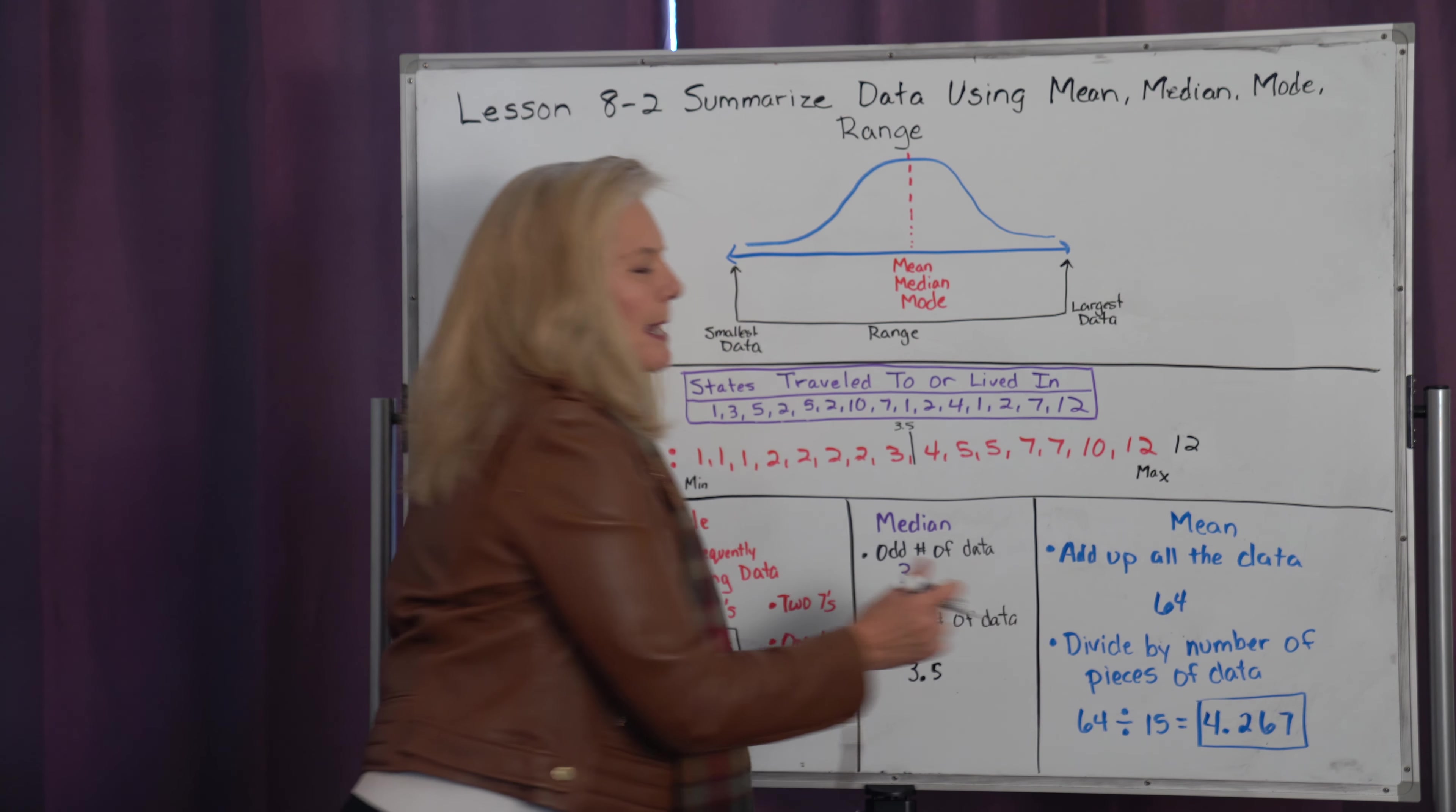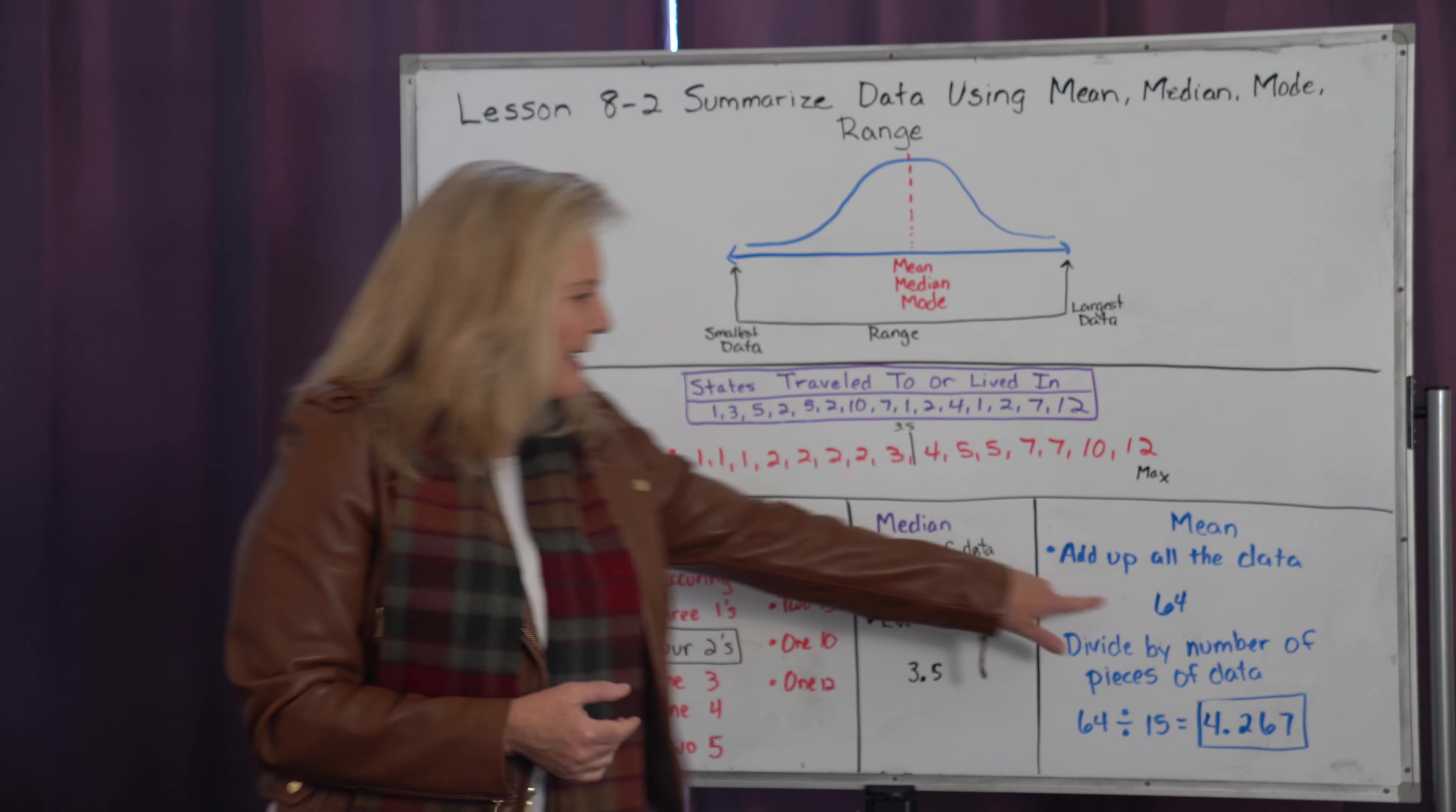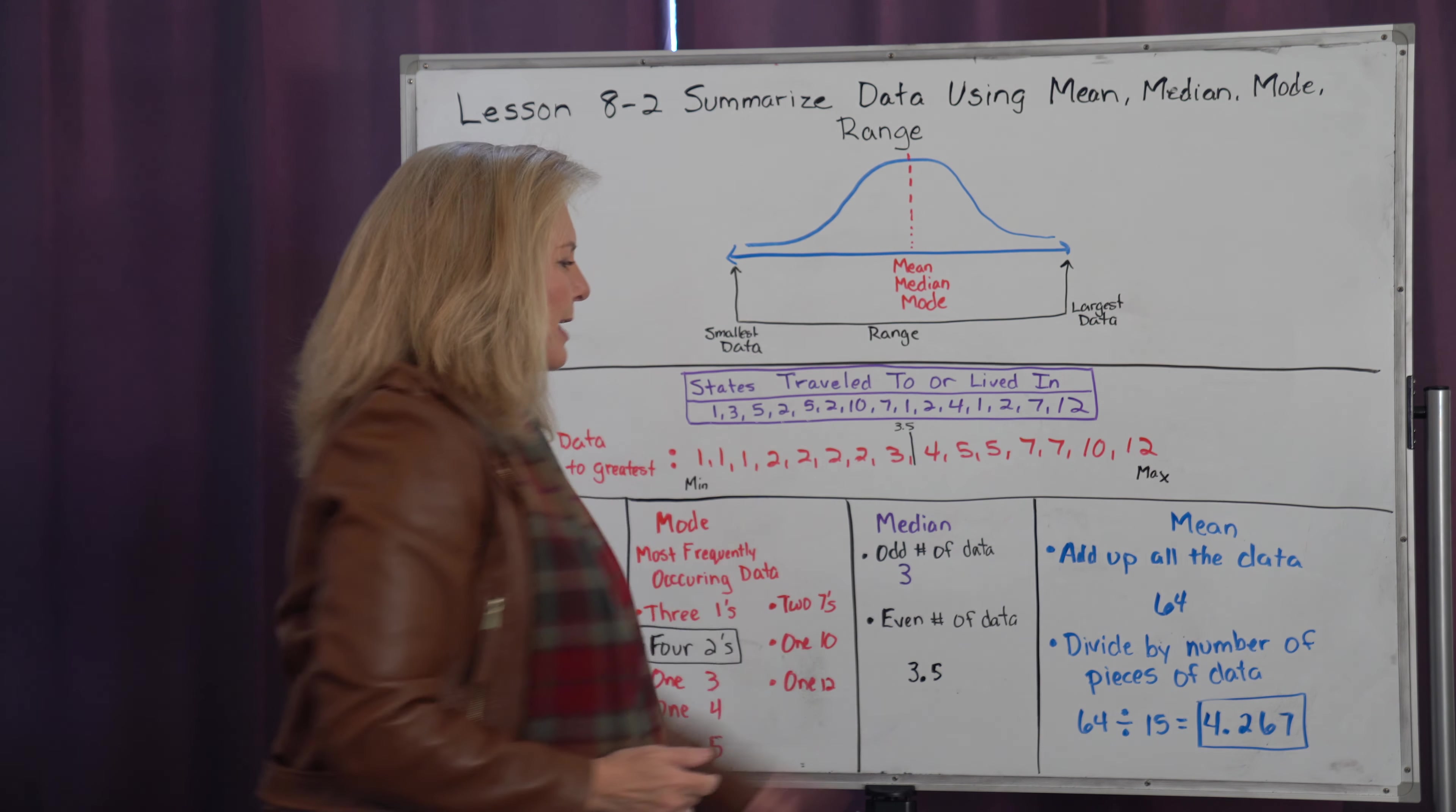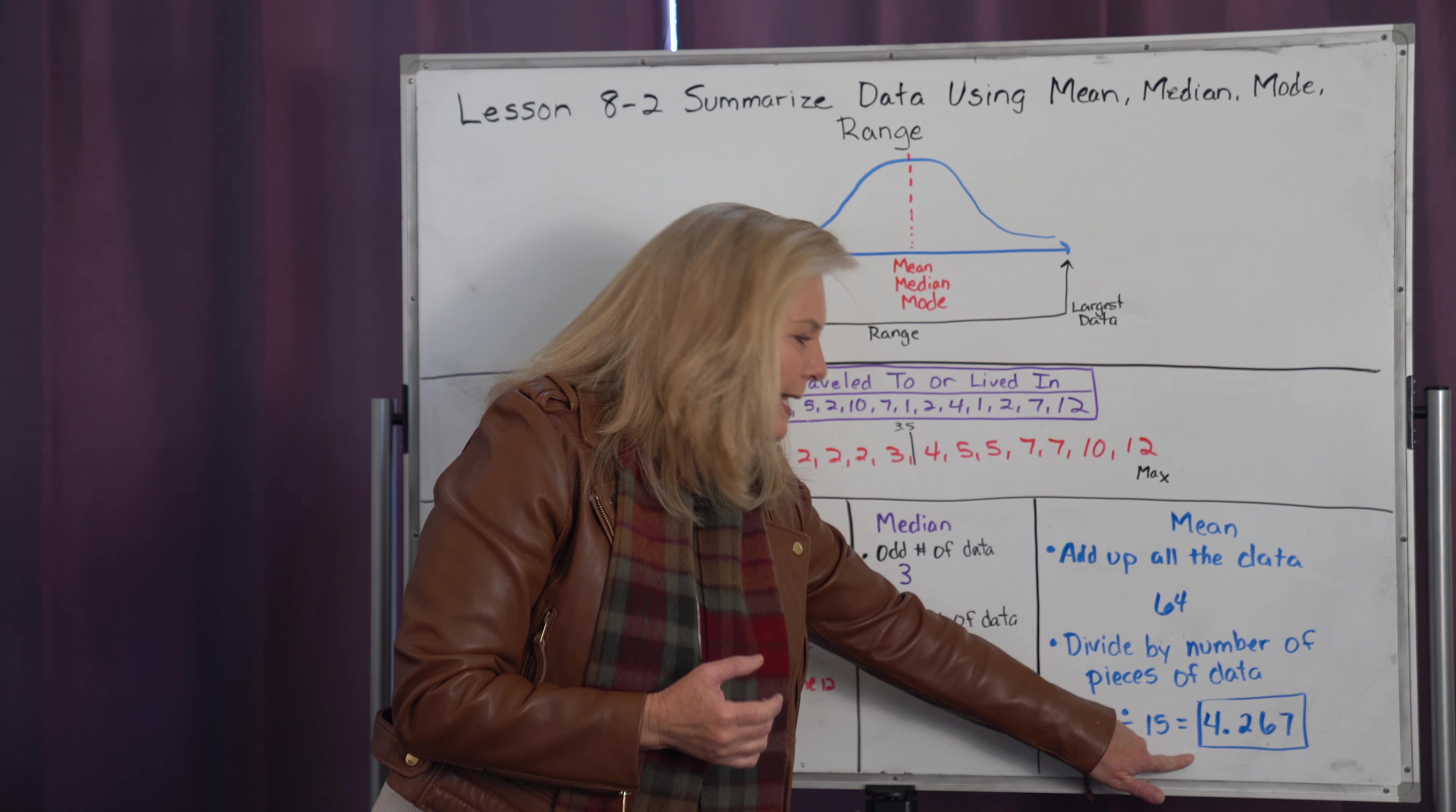When I look at my mean, my mean takes the most calculation. We're going to add up all the pieces of data - one plus one plus one plus two plus two plus two, all the way down up to twelve. When I did that, I got sixty-four. Clearly, sixty-four is not the center point of this data because it's much bigger than even my biggest piece of data. In order to get that center part, we're going to take sixty-four and divide it by the number of pieces of data I had. I had fifteen pieces of data, so I'm going to take that sixty-four and divide it by fifteen, and I get 4.267.